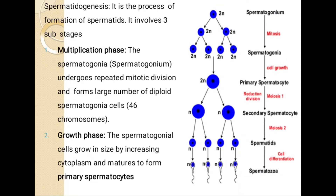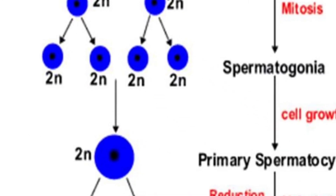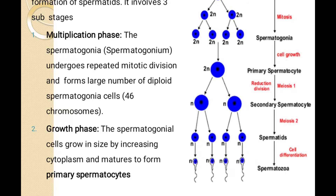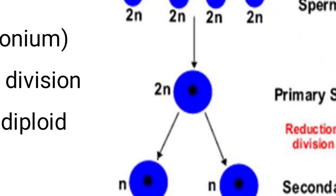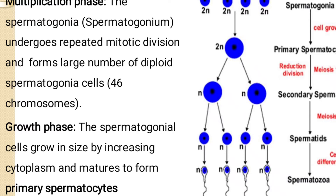After that comes the growth phase. In the growth phase, out of these 4 cells, only one cell goes into growth phase. In growth phase, spermatogonia cells grow in size by increasing the cytoplasm. Due to increased cytoplasm, the cell's size grows and it matures into primary spermatocytes. Then reductional division — meiosis — occurs, and this one cell divides into two cells which we call secondary spermatocytes. Since reductional division is occurring, from 2n, 1n is formed.